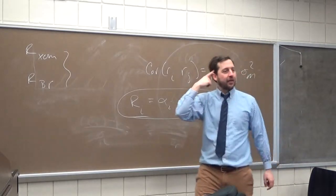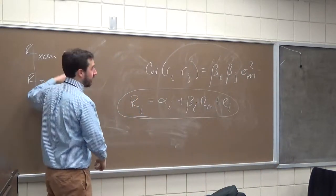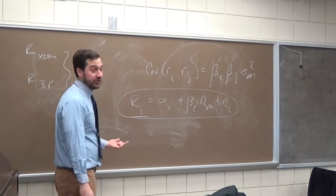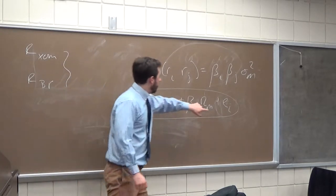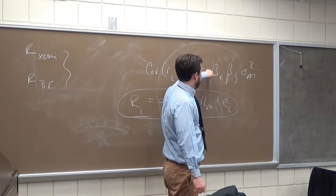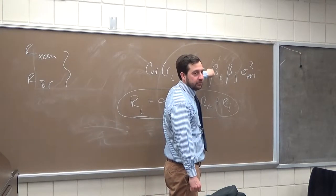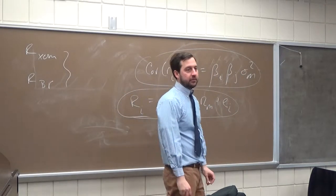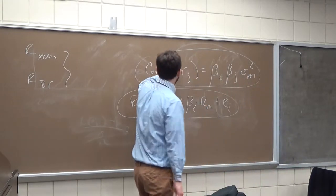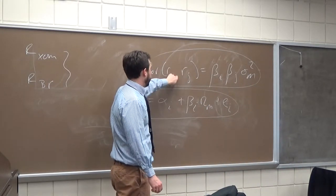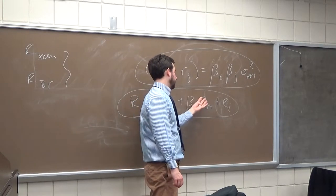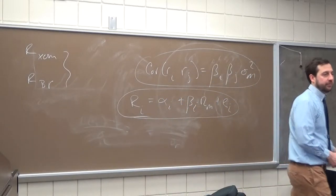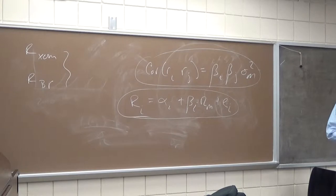It would actually be interesting to assign a homework where you calculate the market model for these two stocks and see if there's a correlation in the error terms. Now, the question is: does that correlation in the error term come into play in the index model covariance formula? Nothing in that formula includes a correlation in the error term. So if we use this index model methodology to calculate the covariance, but there are industry effects causing correlated error terms that we're leaving out, will this understate or overstate the covariance? It will understate it.